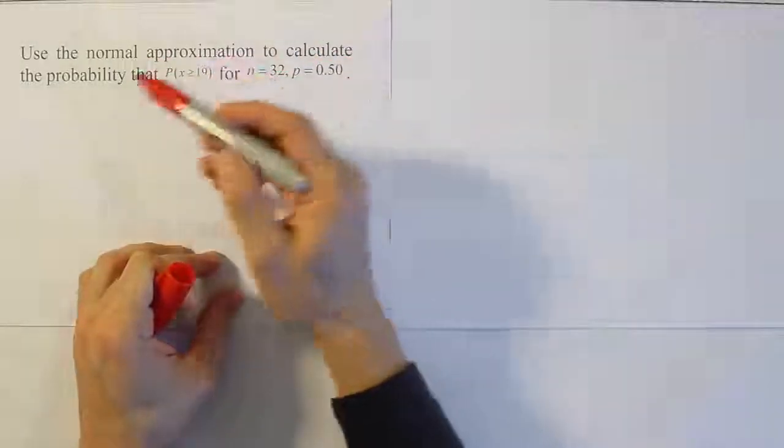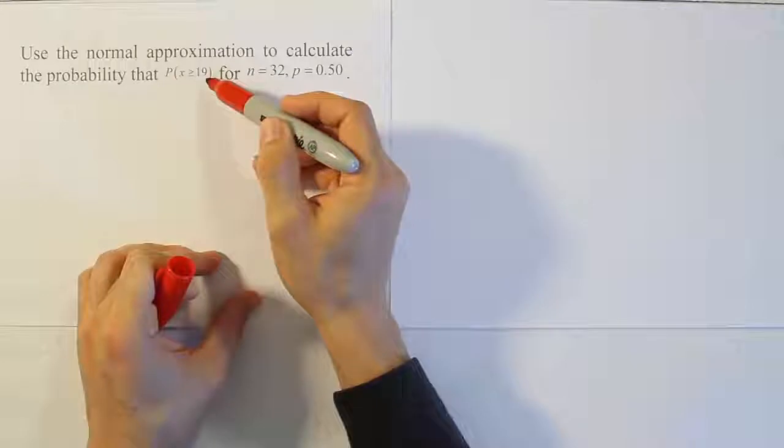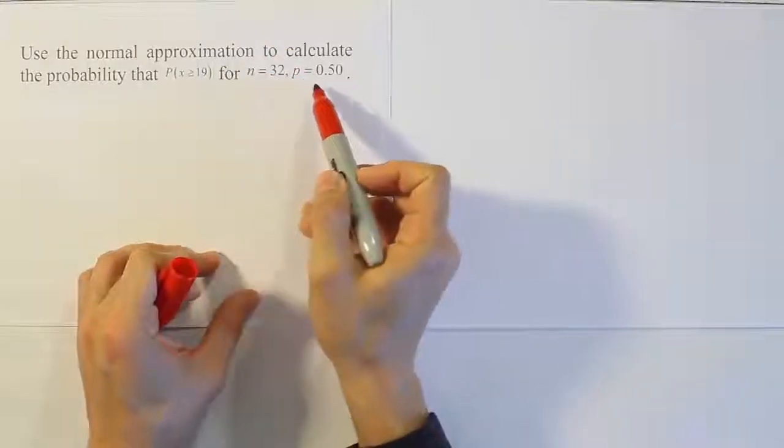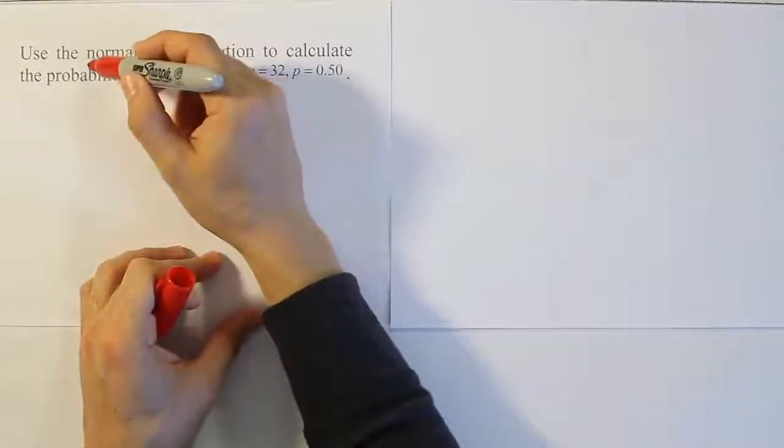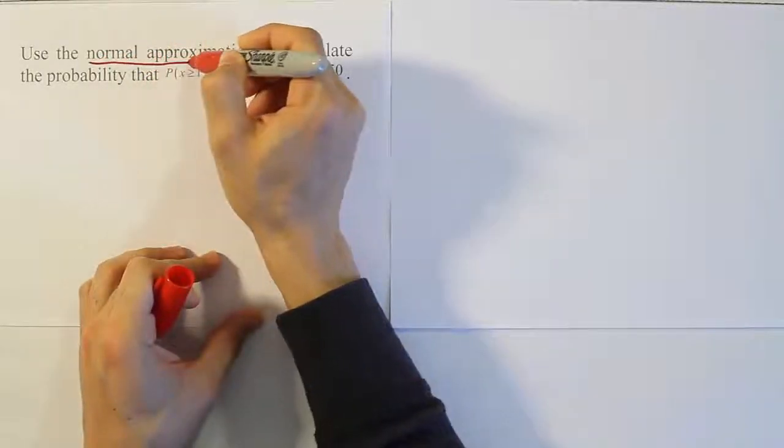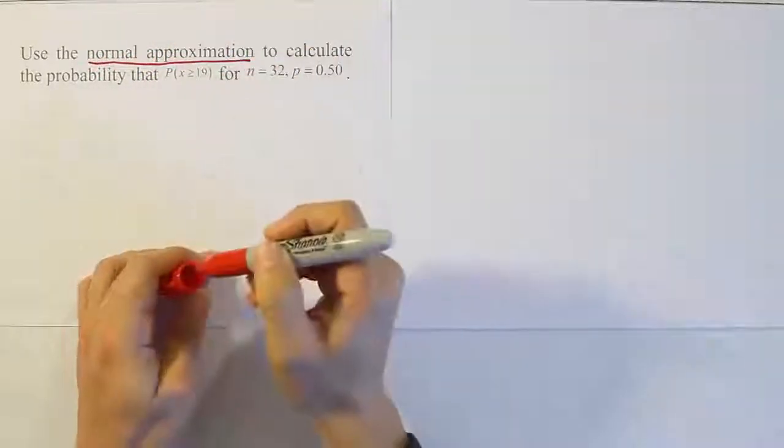Use the normal approximation to calculate the probability that x is greater than or equal to 19 for n equals 32 and the probability is 0.5. Normal approximation means we're going to use the bell curve to approximate a binomial probability.